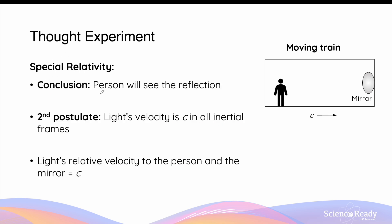Thus, special relativity concludes that the person will in fact be able to see the reflection. This is consistent with the second postulate of special relativity, which states that light's velocity in a vacuum is always c for all inertial frames of reference. The speed of light originating from the person to the mirror will be equal to c with respect to every object. So although the train is moving at the speed of light c, the light relative to the train, the mirrors, and the passenger will be moving at c. This means light will travel from the person to the mirror at its original speed c, reach the mirror, and be reflected back to the person, allowing him or her to see their own reflection.